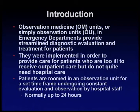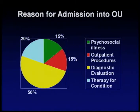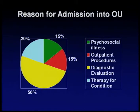This pie graph represents the percentage of patients who are admitted for different reasons. 15% are admitted for psychosocial illnesses. 15% are also admitted for outpatient procedures, 50% are admitted for diagnostic evaluation, and 20% are for therapy for their condition.